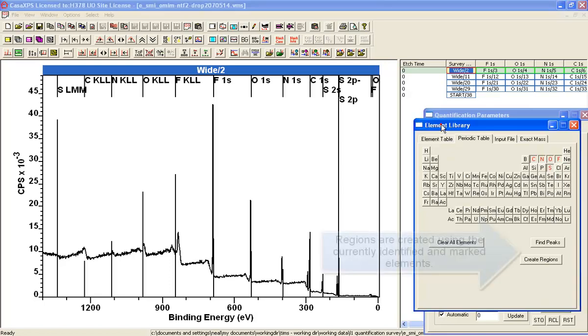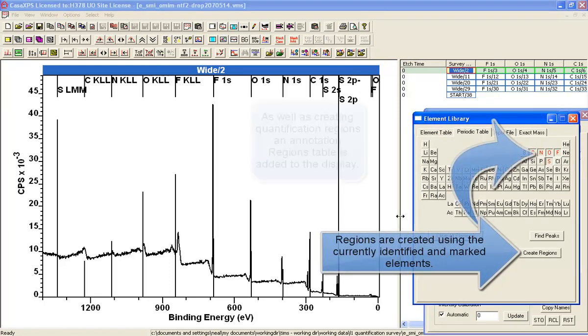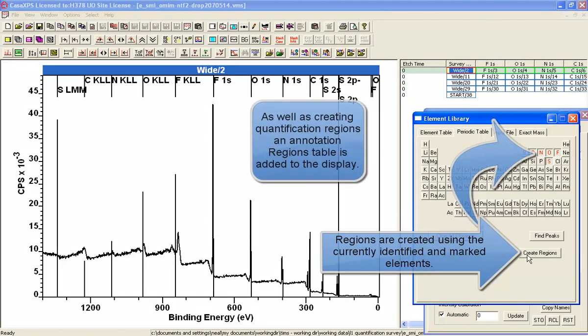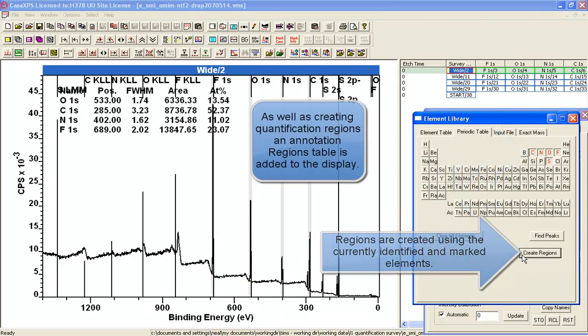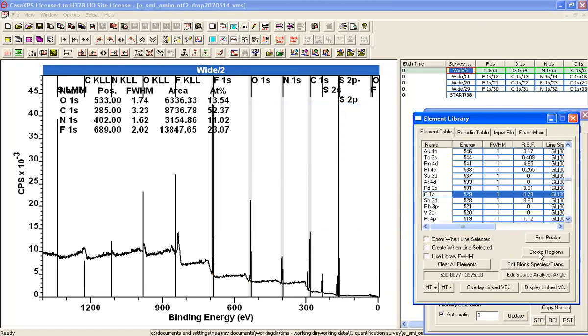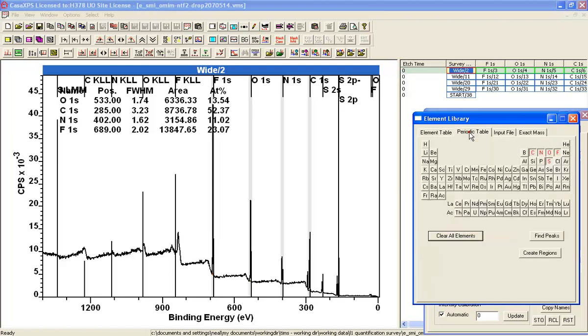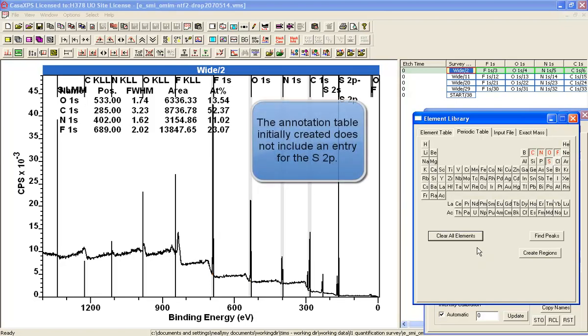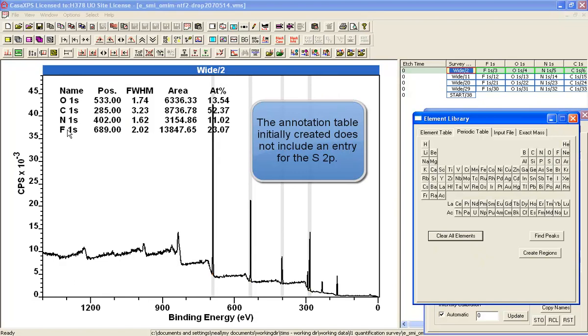So, having identified and decided that these are all good, what we can do is create regions using the button on the periodic table or even the one that's on the element table. They both do the same thing. Based on the buttons you see highlighted here, a set of regions have been created and a table has been placed over the data.